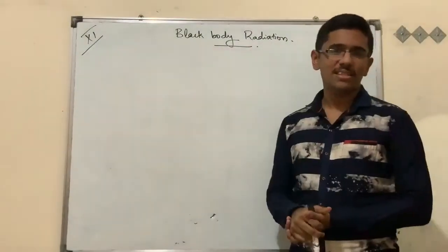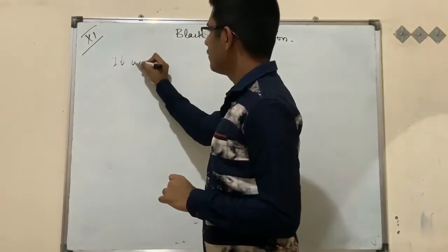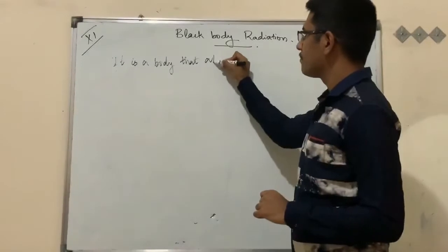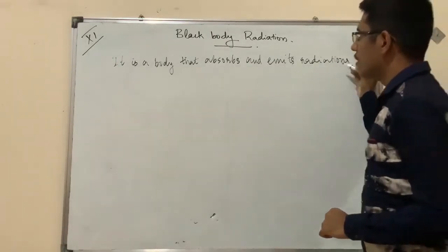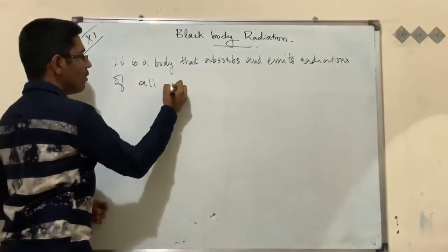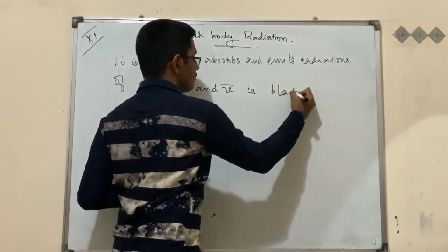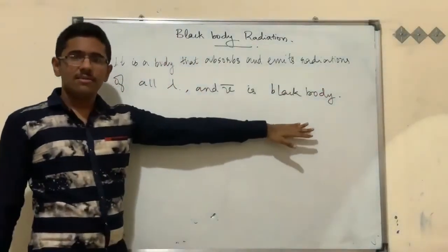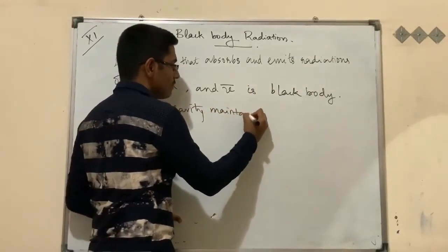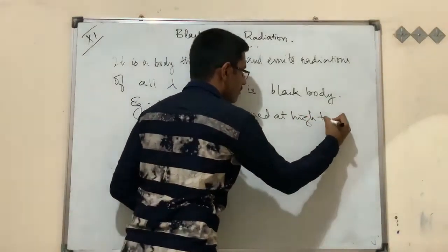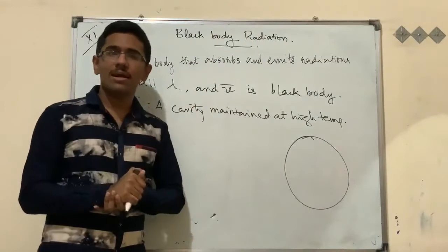We are going to study about black body radiation in detail. A black body is a substance or condition in which a body absorbs and emits radiations of all wavelengths (represented by lambda) and frequencies. The term 'black body' does not mean an object made of black color — it is a physical condition.